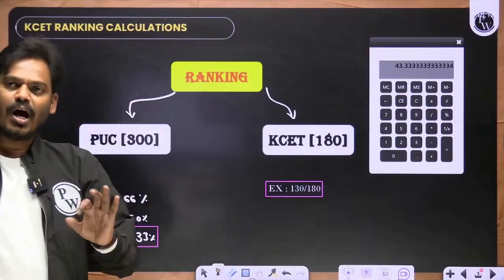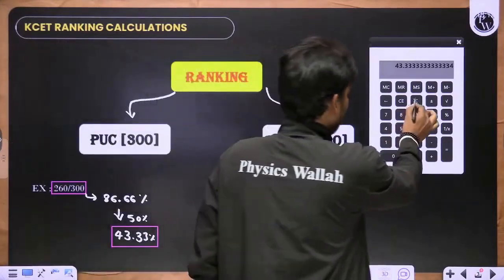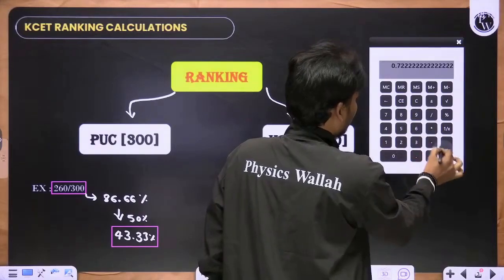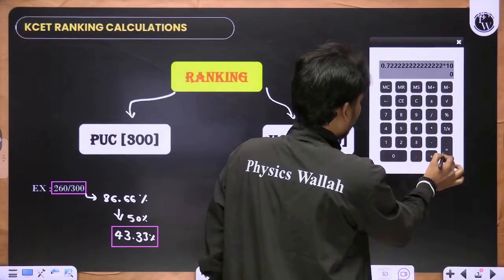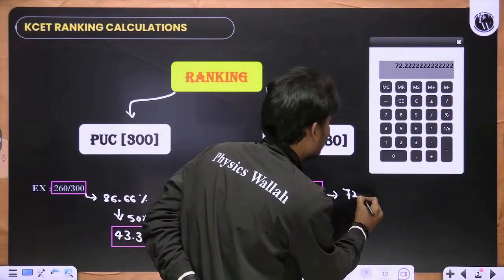KCET is 180. Out of 180, you got 130 marks. 130 out of 180 into 100. The percentage is 72.22 percent.